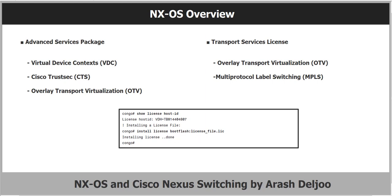This example shows the simplicity of installing the NXOS license file. Once a license file is obtained from Cisco.com and copied to flash, it can be installed for the chassis. The command 'show license host-id' displays the host ID used for license file creation on Cisco.com. Then use 'install license bootflash:' followed by the name of the file. As you can see, it installs successfully and the license is now active on the device.